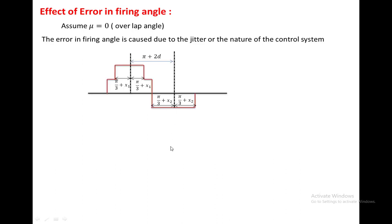In a star-to-star transformer feeding power to one converter, if we look at the phase A current, this is the waveform of the phase A current with an error in firing angle. The positive cycle and negative cycle are not symmetrical because of the error in firing angle. Here we define three parameters: one distance is pi/3 plus x1, and the distance between the center of the positive cycle and the center of the negative cycle is pi plus 2d.